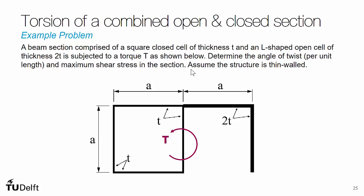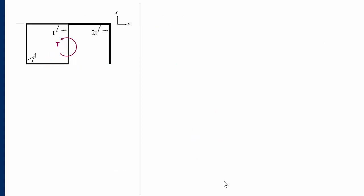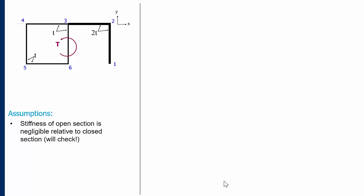The problem tells us we can assume the structure is thin walled, so we will use thin walled approximations throughout. Looking at this section, we can make some simplifying observations. First, let's label our corners so we have reference points. The first assumption is that the stiffness of the open section is negligible relative to the closed section. Closed cross sections have very high torsional stiffness while open sections have low stiffness.